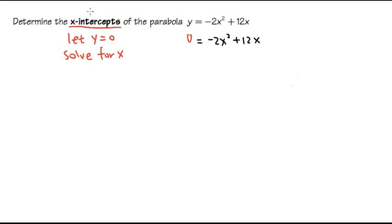So once again, whenever we're trying to find the x-intercept, we are going to first let y equal to 0, and then we will solve for x. So let's look at this equation. How can we solve this?